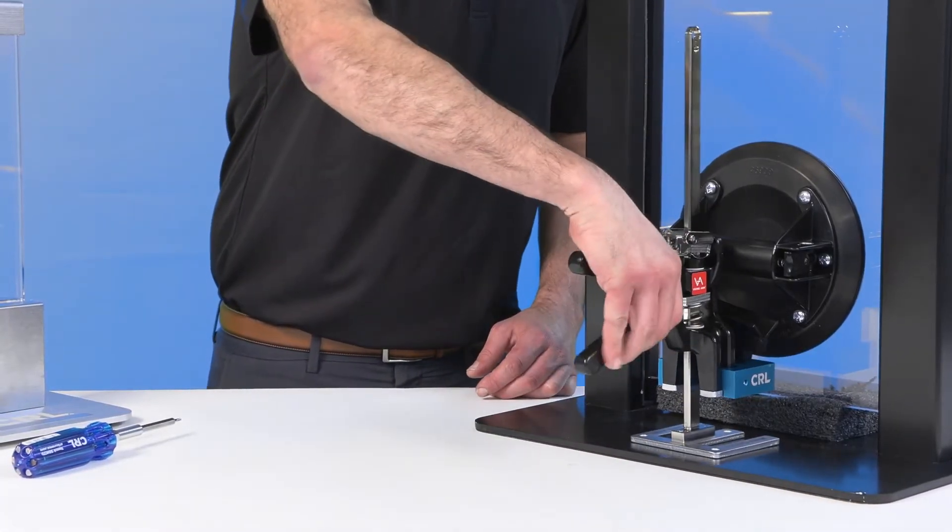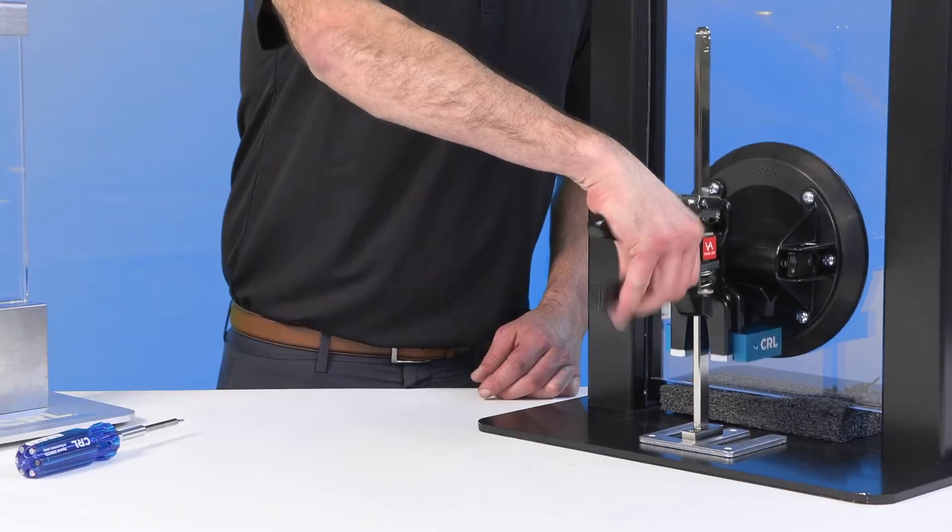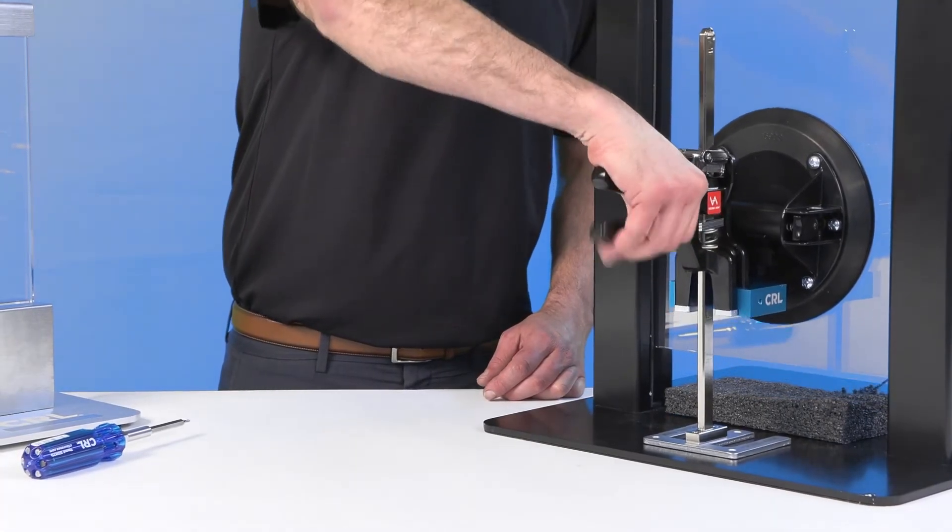Align the tool under the cup handle and squeeze the trigger until flush with the handle. The tool is now ready to lift the glass.